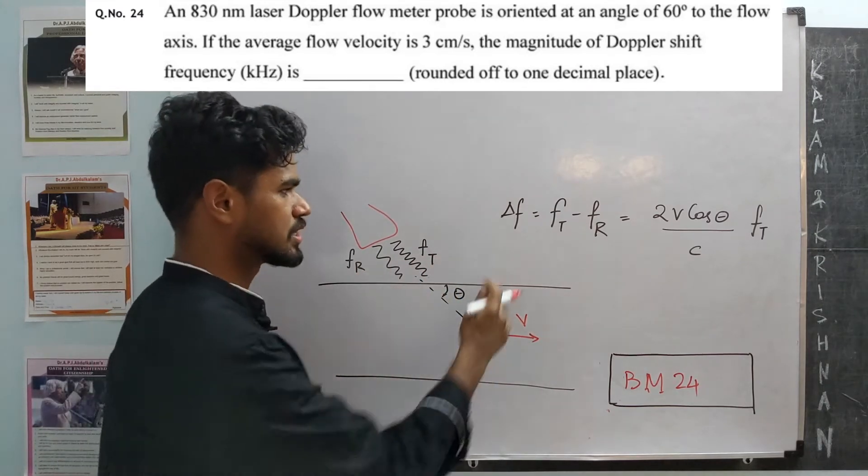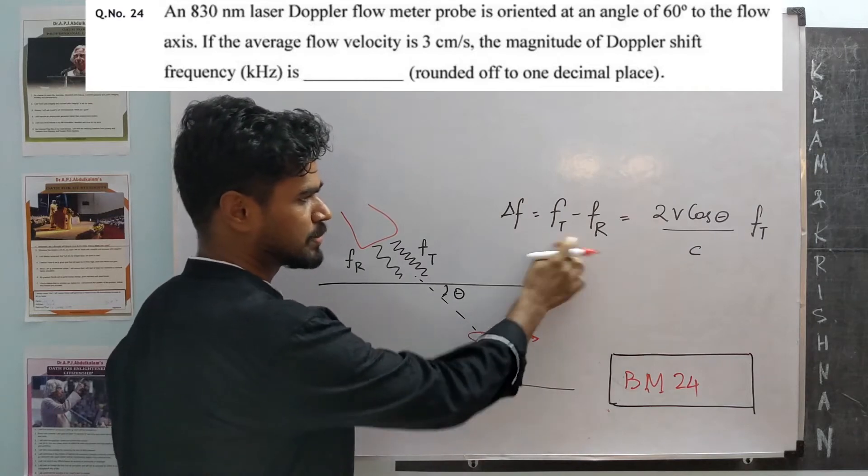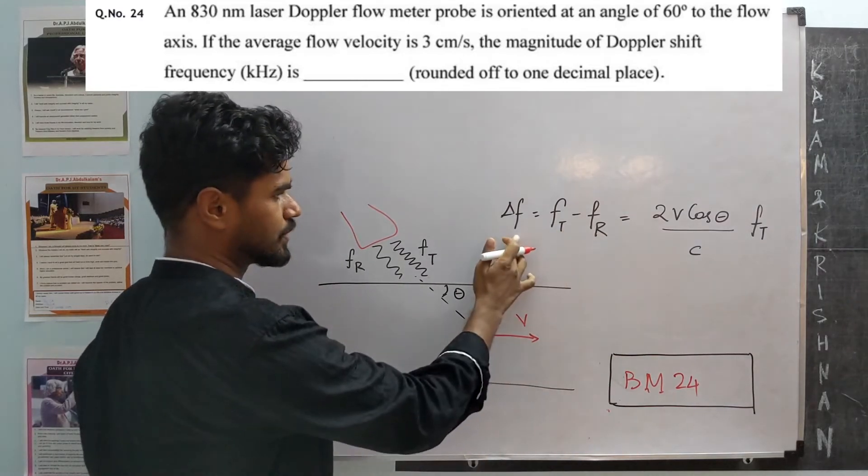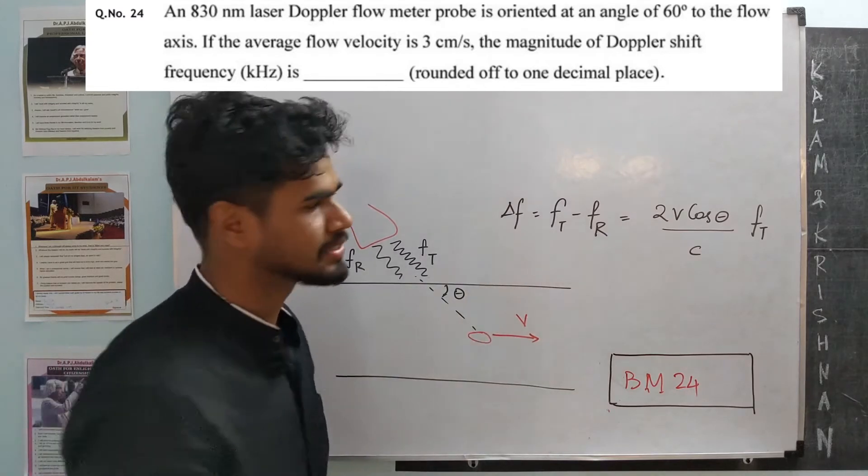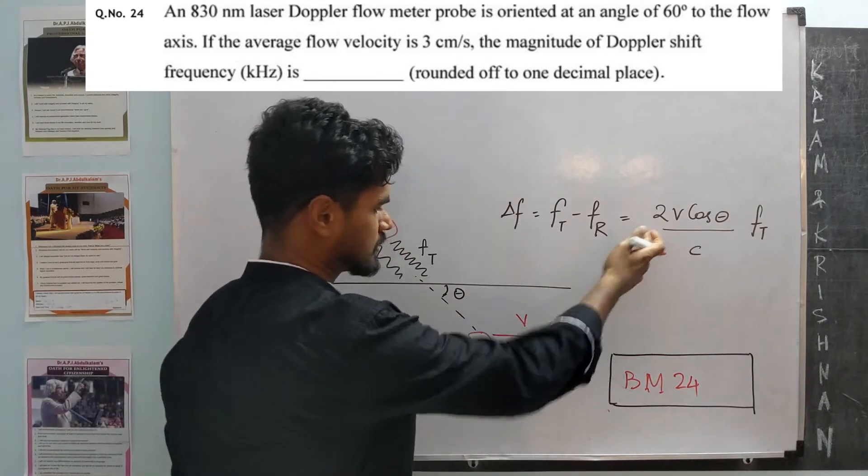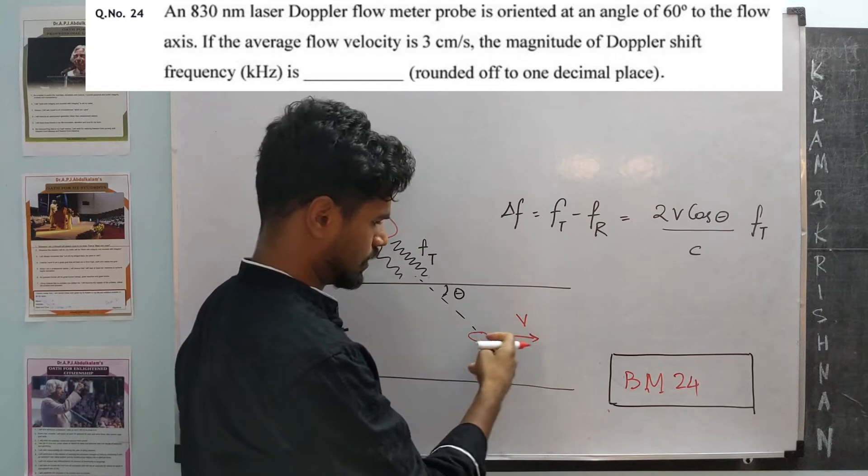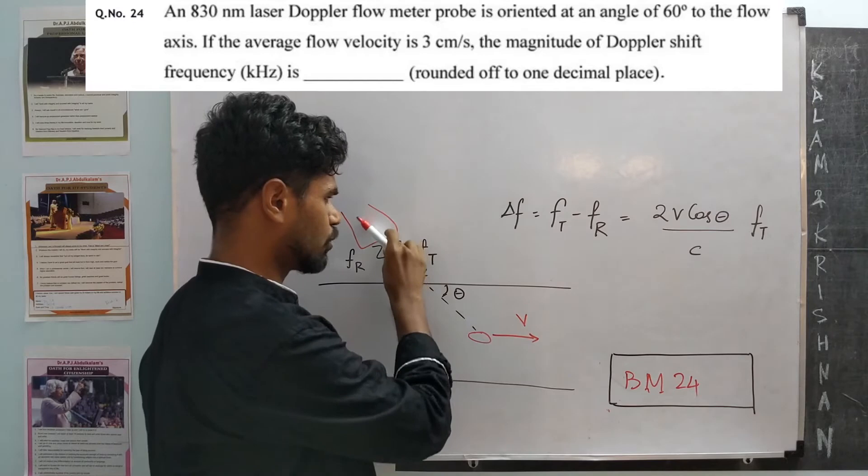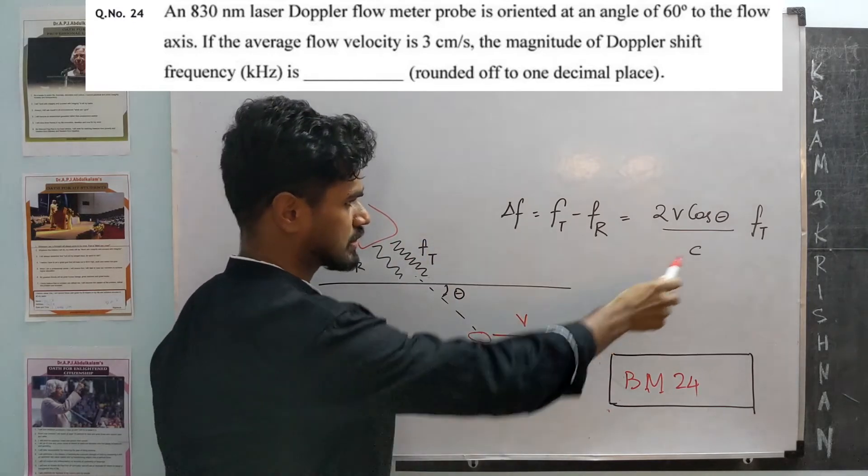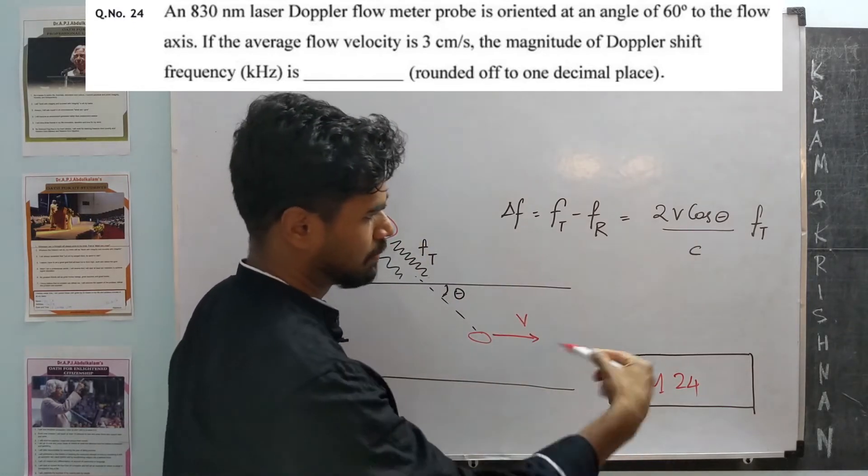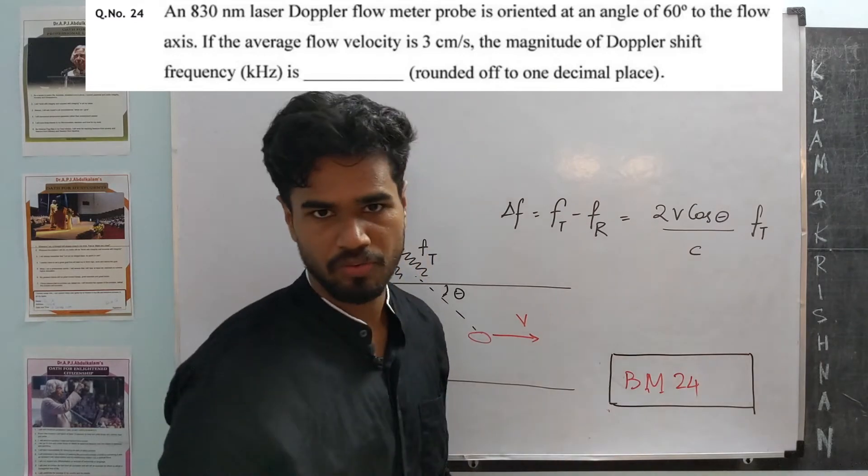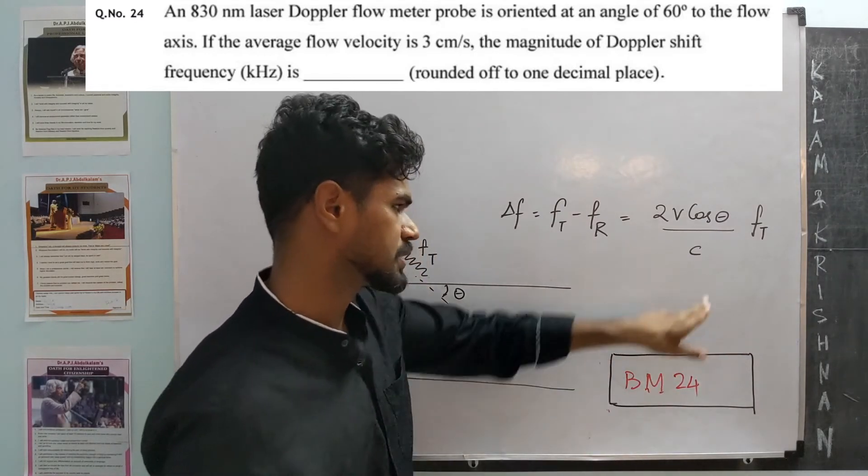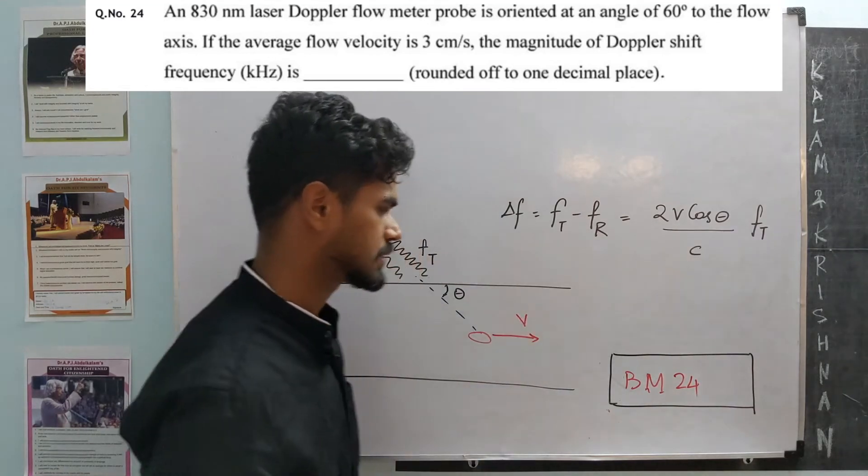So Doppler shift is essentially the difference between these two: transmitted minus reflected or received is known as Doppler shift. That is given by two times v, the velocity of flow, times cos theta, the angle at which the probe is oriented with respect to the flow axis, divided by c, which is the speed of light, times the transmitted frequency ft.